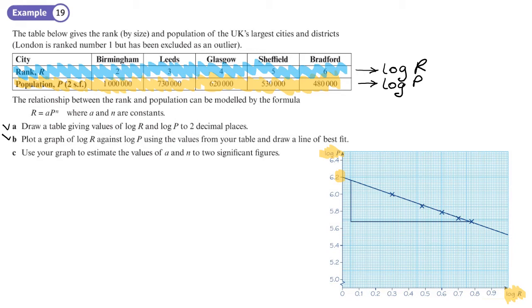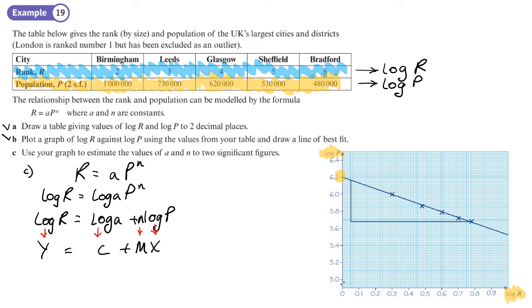It says use your graph to estimate the values of a and n to two significant figures. So what we do is the relationship is this: r equals a p to the power of n. What we're going to do is do the log of both sides. We've got log r equals log a p to the n. Now this is part c. The log a and log p can cancel out, and then the n goes to the front as a power. So this is like y equals mx plus c. So log a is the intercept. Now the intercept I can see is 6.2. So log a equals 6.2, that's the intercept. So then I can work out a, because this is log to the base 10. So 10 to the power 6.2 is what a is.